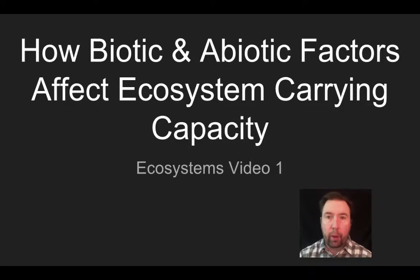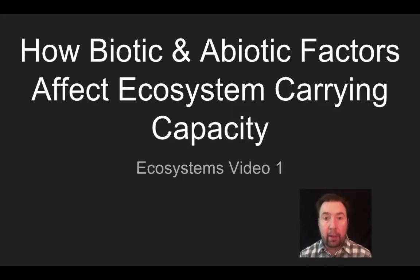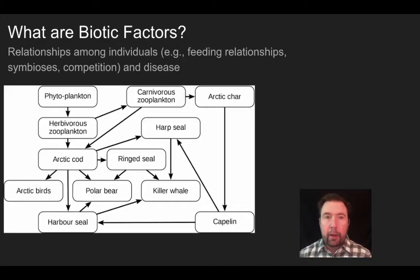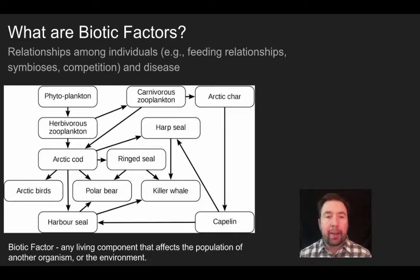In this video we're going to talk about both what biotic and abiotic factors are, as well as looking at a few different models of how they will influence the populations within a given ecosystem. The first thing we're going to talk about is what is a biotic factor — a biotic factor is any living component that affects the population of another organism or the environment.